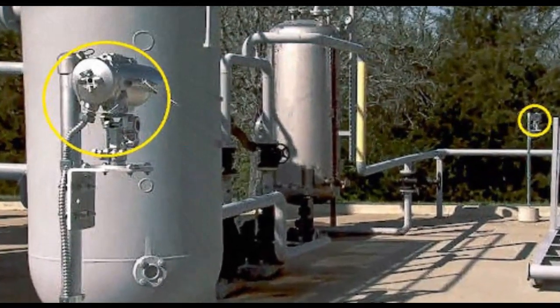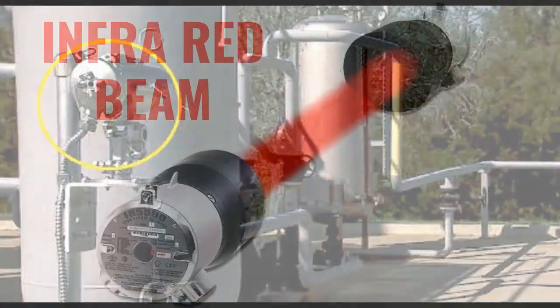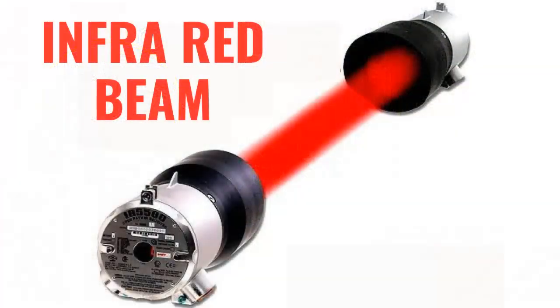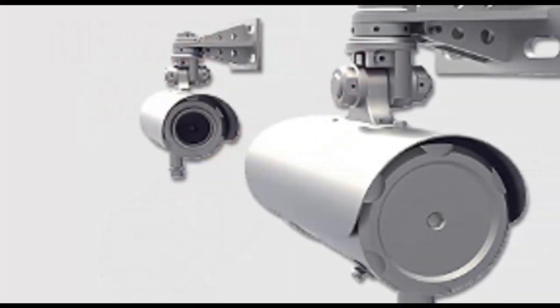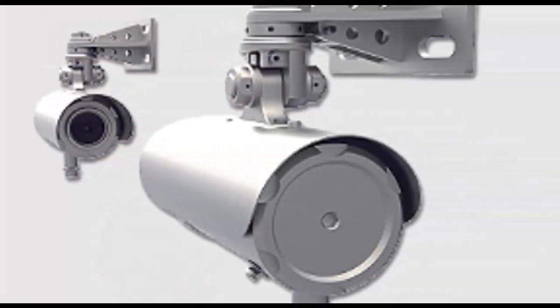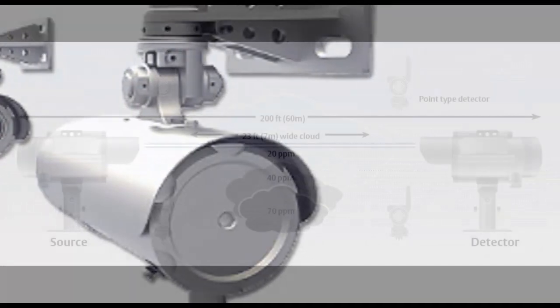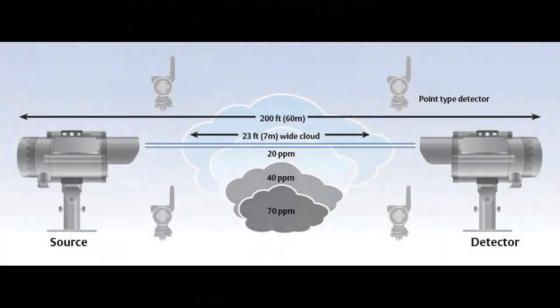The transmitter emits a light beam, infrared or ultraviolet, along a straight path. The receiver is located at a distance from the transmitter. It detects the light beam after it has traveled through the atmosphere. The path is the area between the transmitter and the receiver where the gas concentration is measured.